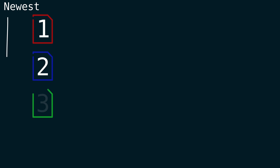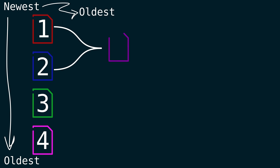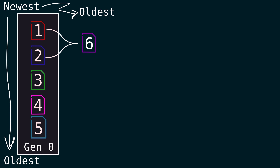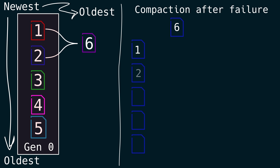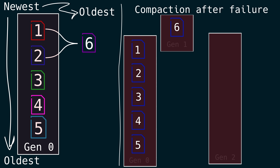We are still going to have to think about making sure we don't enter into a bad state if the compaction fails for some reason, or if the process of the database fails with only a single thread. And this is where the generations become very important. Let's say we crash right here after the first two files are compacted — well, that's okay. Let's walk through the possibilities.